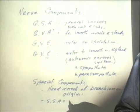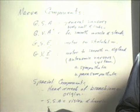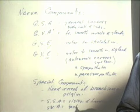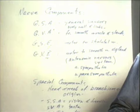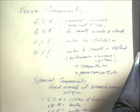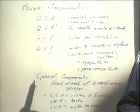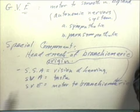Special somatic afferent (SSA) examples include vision and hearing. Special visceral afferent (SVA) example is taste. Special visceral efferent (SVE) provides motor supply to the branchomeric muscles. The special components are all in the head and neck, and the SVE component is associated with that system. The SSA and SVA are the two special senses.